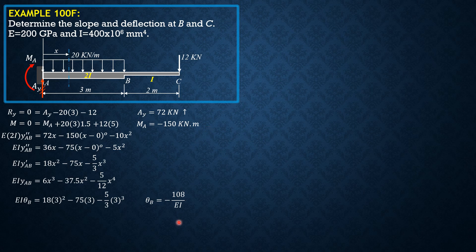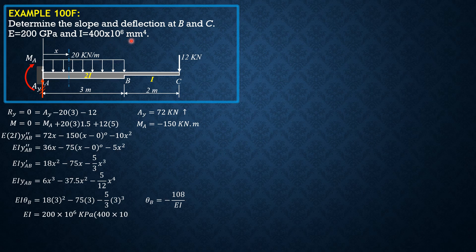So since EI is 200 times 10 to the 9 pascals or 200 times 10 to the 6 kilopascals kilonewton per meter square times I 400 times 10 to the 6 mm to the 4th. So we divide this by 1000 mm to the 4th to make this meter to the 4th. So kilonewton per meter square times meter to the 4th, that would be 200 times 400. We can cancel 10 to the 6, 10 to the 6, and 1000 to the 4th. So that's 80,000 kilonewton meter square. That's the value of EI.